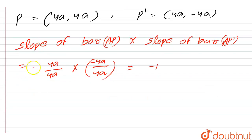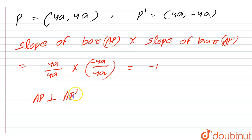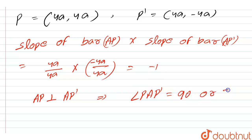As we know, if the product of slopes of two lines equals −1, then the two lines are perpendicular. Therefore, AP is perpendicular to AP', which means angle PAP' = 90° or π/2. Hence proved.